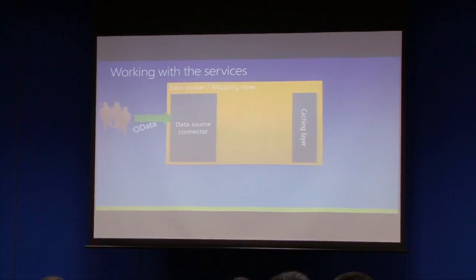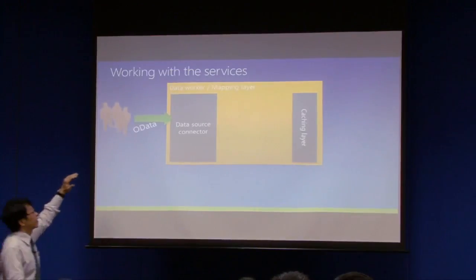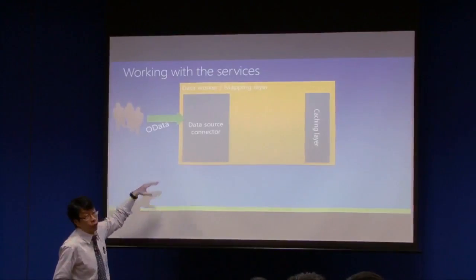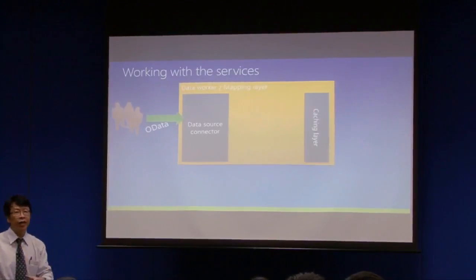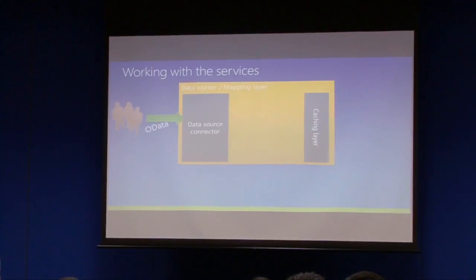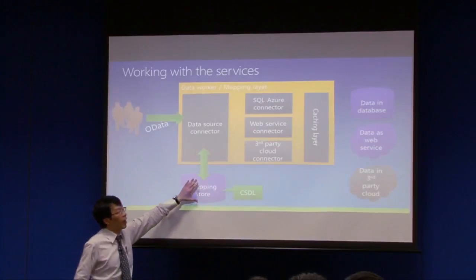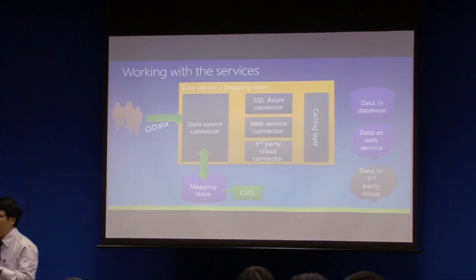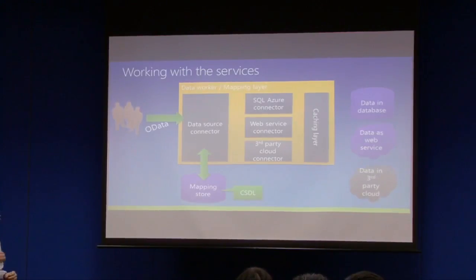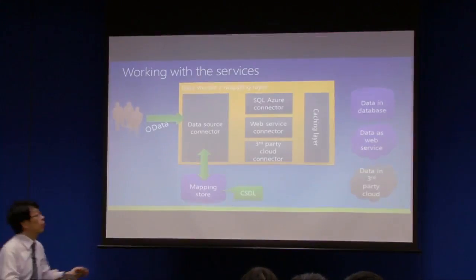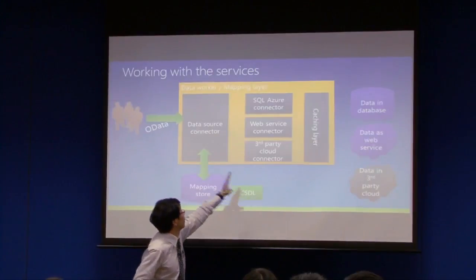Just an illustration of the different ways in which access actually takes place. Developers access Azure Data Market via the OData protocol, which is over the internet and HTTP-based. It accesses the first component, which is the data source connector. What the data source connector does is pull data out from a mapping store, allowing it to determine that a person intends to get a particular dataset and how to get the data from the backend to satisfy that customer.